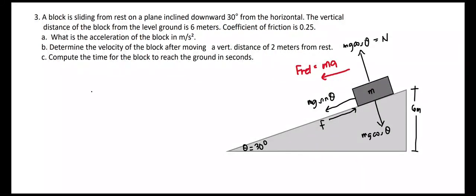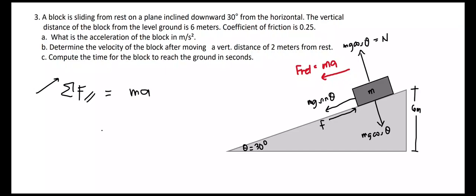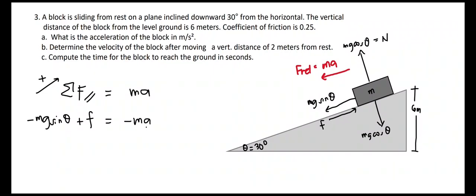To compute the acceleration of the block in meters per second squared, we take the summation of forces along the inclined plane, equal to mass times acceleration, considering the downward-along-incline direction to be positive. So we have the gravitational component negative mg sine theta, plus the friction force going upward equal to negative ma. It is negative because it is going in the opposite direction of our reference axis — positive x along the incline, positive y perpendicular.